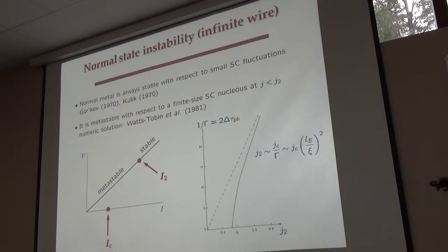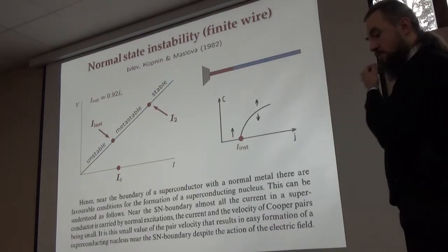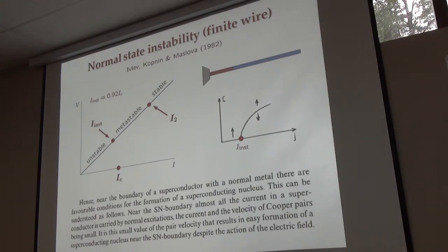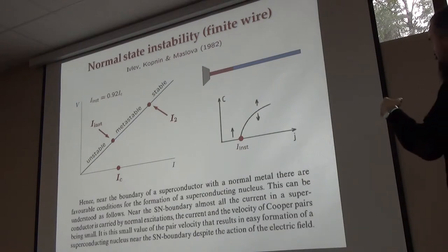The critical current I2 in this case can be expressed through the apparent current with a coefficient involving gamma. For sufficiently weak inelastic relaxation, I2 is much larger than the coherence length because L_e is large. What was done by Nikolai, in collaboration with Yildiv and Maslow, is that if you take not an infinite wire but a finite wire with some normal boundary — a good contact with a normal terminal — they showed that the nucleus of the superconducting state finds it much easier to nucleate close to the normal boundary.